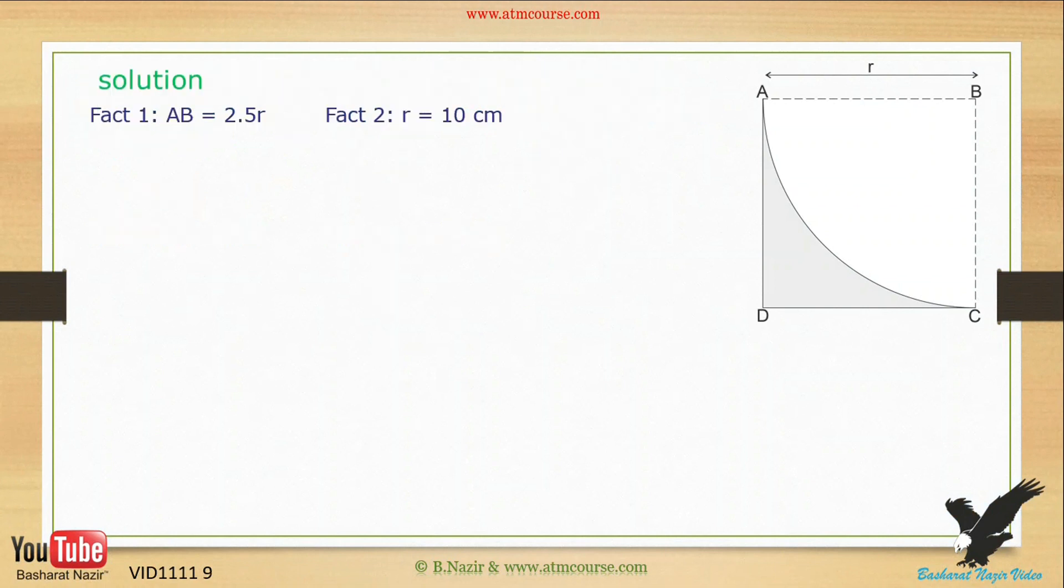First label is the shaded area, which the question wants us to work out. We will call this A1. Second label is the cut-out area of the circle. We will call this A2. Finally, label the area of the square. We will call this A.